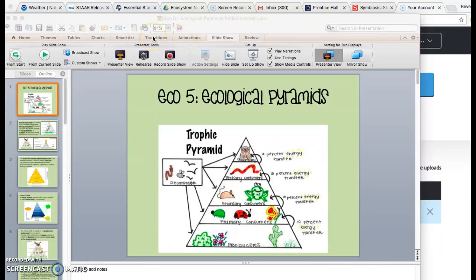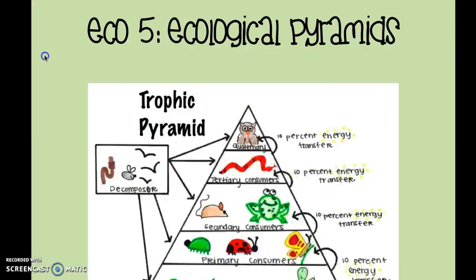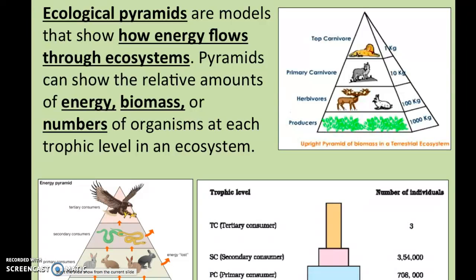We're learning about ecological pyramids today. This is your ECO five notes — go ahead and find that in your lab notebook. Ecological pyramids are models. This is just a little bit of information to help you with some background about ecological pyramids. They represent something about the environment, because eco means environment. They generally show how energy is going to flow through an ecosystem — trophic pyramids showing energy, biomass, or the number of organisms in an environment. Several different ways to present data about an ecosystem.